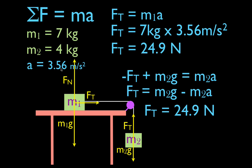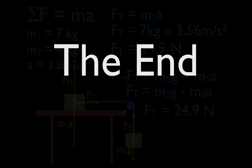That's the whole thing — the acceleration is 3.56 m/s² and the tension is 24.9 Newtons. Thank you very much for watching. I hope you found it helpful. If you did and you want more videos, please subscribe and click the subscribe button. You can also give a thumbs up or leave a positive comment in the comment section below. We will see you in the next video.